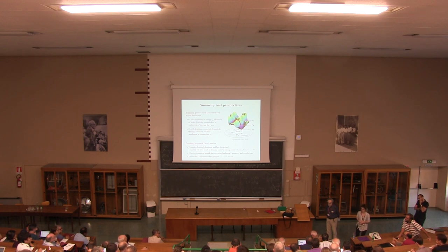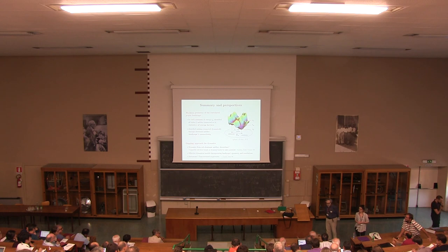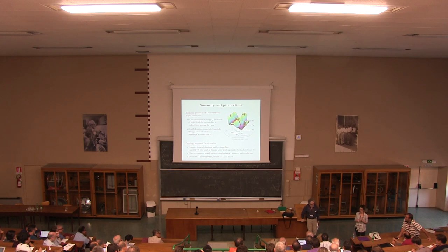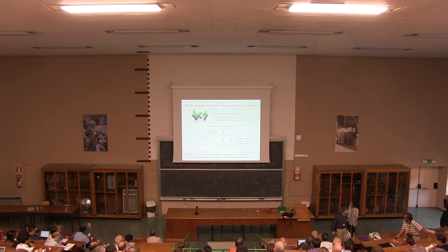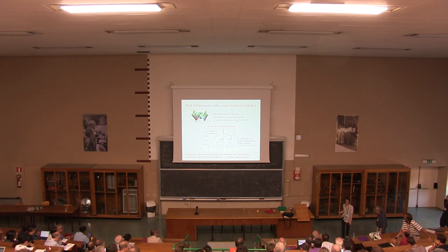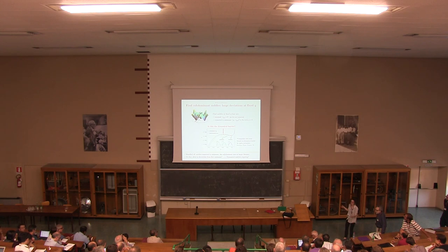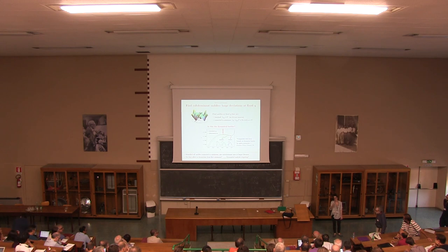Regarding the three-replica potential: there were two regimes. In one regime, the barrier found in that way was essentially given by the local maximum of the two-replica potential, and what we find is that this local maximum of the two-replica potential coincides with the local maximum of the green curve, which is a lower bound of the dynamical barrier — the value we have is slightly above, so it's compatible with the lower bounds. In the other regime it was not given by the local maximum, and that I did not compare.